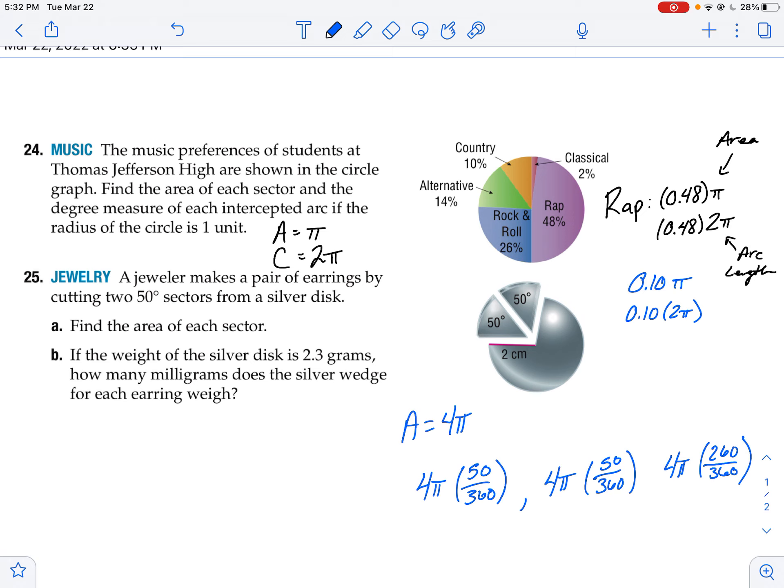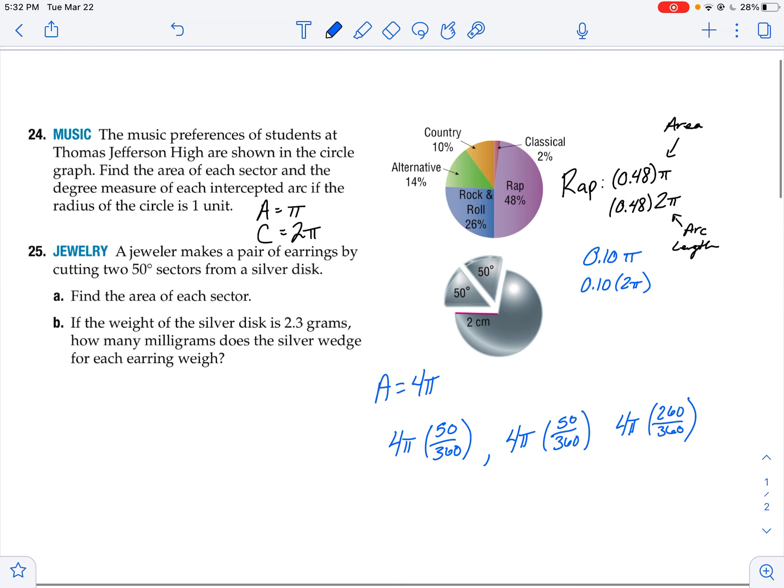And the second part of the problem says that if the weight of the silver disc is 2.3 grams, how many milligrams does the silver wedge for each earring weigh? So I have, I'm going to take the weight is 2.3 grams. This is part A. For part B, I've got 2.3 grams.